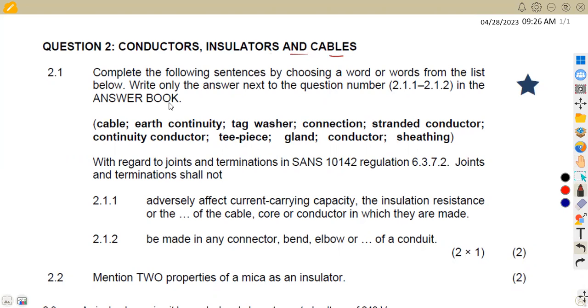We are given the first part on question 2.1 to complete the following sentences by choosing a word or words from the list below. Only the answer next to the question number 2.1.1 up to 2.1.2 in the answer book. So we are given these are the answers where we are supposed to be picking from. With regard to joints and terminations in SANS 10142, from the SANS regulation, the joints and terminations shall not...